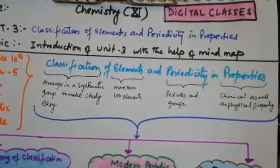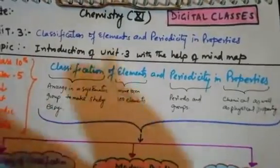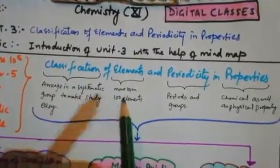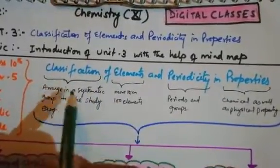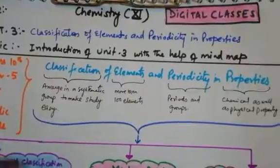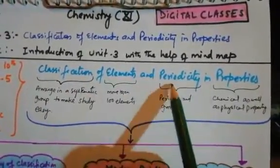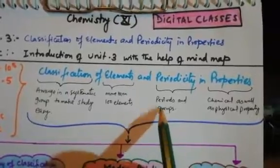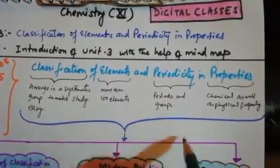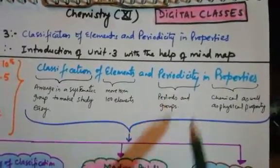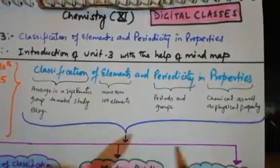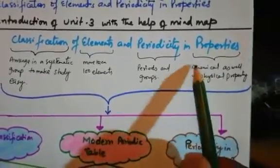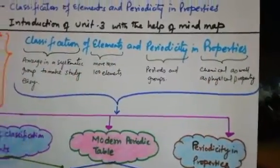This makes the shopkeeper's work easy — if you want to buy a biscuit, the shopkeeper can go directly to that corner. Similarly, there are more than 100 elements discovered, and we need to arrange them in a systematic way in groups to make our study easy. 'Periodicity in properties' is about periods and groups — periods are rows, groups are columns — giving a table shape. The table shows common chemical and physical properties used to classify elements.